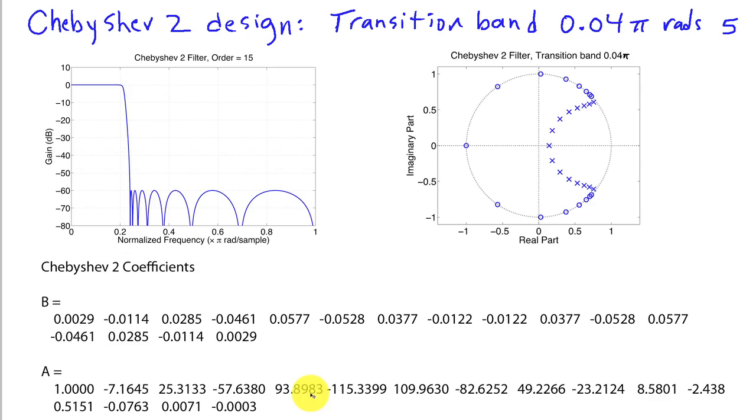We still have a pretty large dynamic range here because the largest coefficient has a magnitude of about 115 and the smallest coefficient has a magnitude of 3 times 10 to the minus 4. So there's still a very large dynamic range here. And this filter, again, may be one that would not work so well if you were implementing it with limited precision, such as in a fixed point arithmetic scenario.